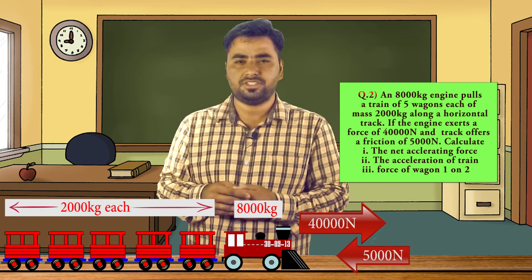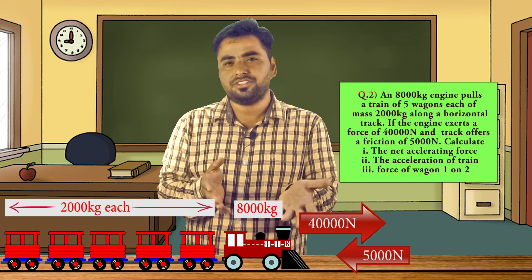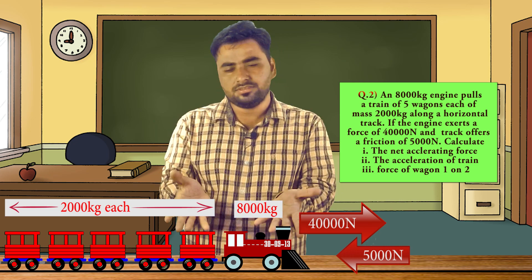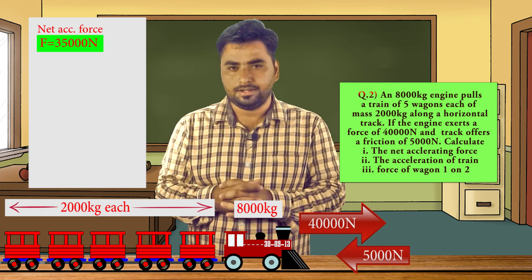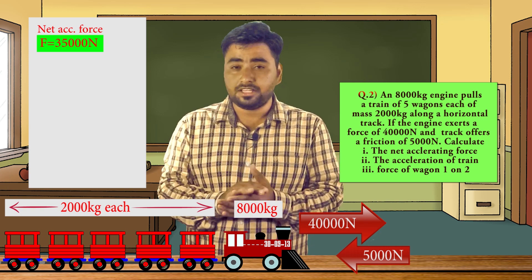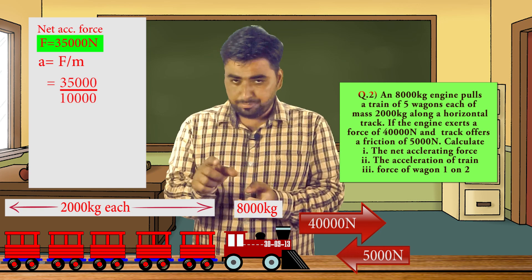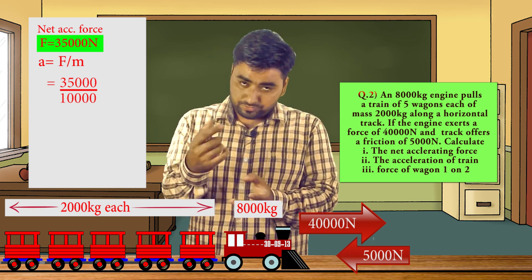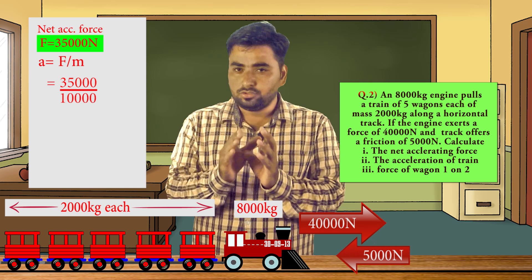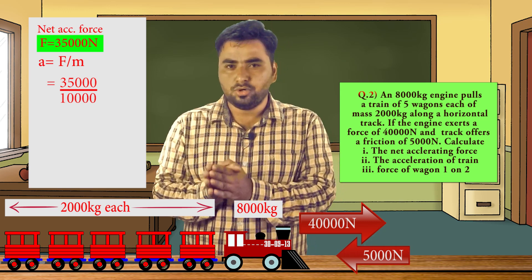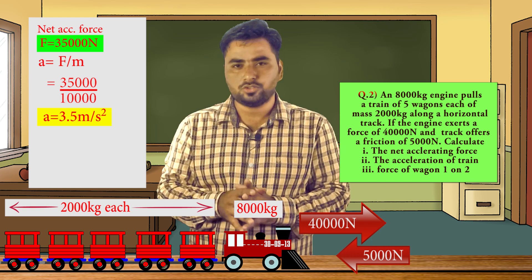So we have this train. The net accelerating force = engine force − friction = 40,000 − 5,000 = 35,000 Newton. The total mass = 5 wagons × 2000 kg = 10,000 kg. So acceleration a = F/m = 35,000 / 10,000 = 3.5 meters per second squared.